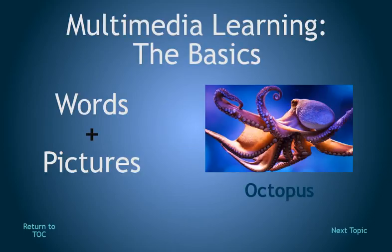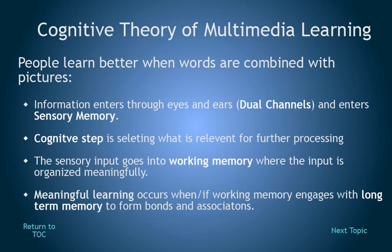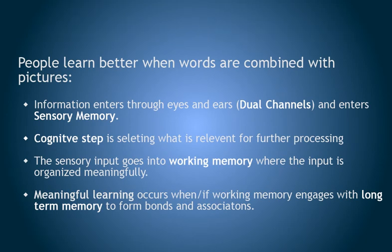Now let's find out why. At its most basic, multimedia learning is a combination of words and pictures. This could be analog as in a traditional textbook, or it could be digital. The words could be written, or they could be spoken. The cognitive theory of multimedia learning is that people learn better when words are combined with pictures.